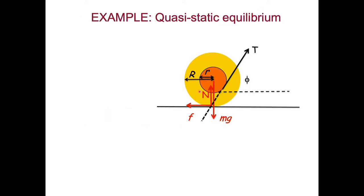Another example is a yo-yo where you're applying force on a string. There's a tension pulling up diagonally at angle phi with respect to level ground. The inner spool radius is lowercase r, and the yo-yo itself has radius capital R. We have Mg, the weight of the yo-yo, pulling down at its center of mass, the normal force pushing up, and friction to the left working against the x component of tension, which acts to the right.